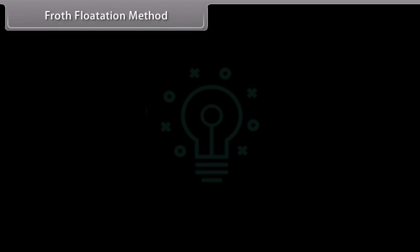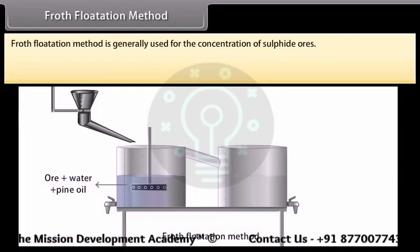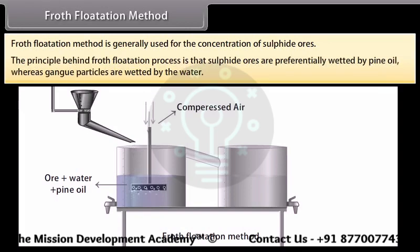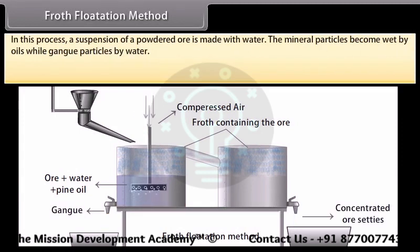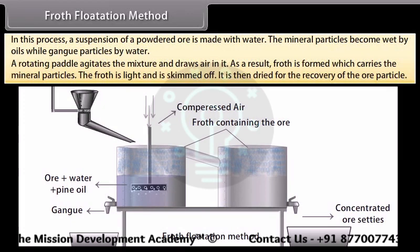Froth flotation method. This method is generally used for the concentration of sulphide ores. The principle behind froth flotation process is that sulphide ores are preferentially wetted by pine oil whereas gang particles are wetted by water. In this process, a suspension of a powdered ore is made with water. Collectors like pine oil, fatty acids and xanthates are added to it. Froth stabilizers like cressols and aniline stabilize the froth. The mineral particles become wet by oils while gang particles by water. A rotating paddle agitates the mixture and draws air in it. As a result, froth is formed which carries the mineral particles. The froth is light and is skimmed off. It is then dried for the recovery of the ore particles.